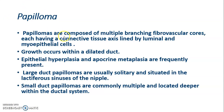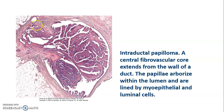Another entity is papilloma. Papillomas are composed of multiple branching fibrovascular cores, each having a connective tissue axis lined by luminal and myoepithelial cells, with growth occurring within a dilated duct. Epithelial hyperplasia and apocrine metaplasia may be present. Large duct papillomas are usually solitary and situated in the lactiferous sinuses of the nipple, while small duct papillomas are multiple and located deeper within the ductular system. The microphotograph shows a duct with a central fibrovascular core extending from the wall, with arborizing papillae lined by myoepithelial and luminal cells.